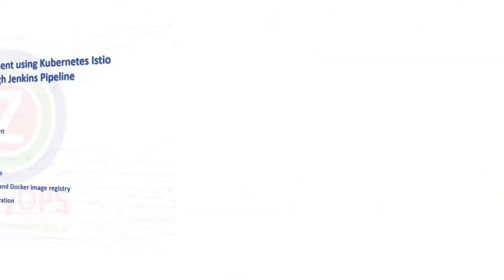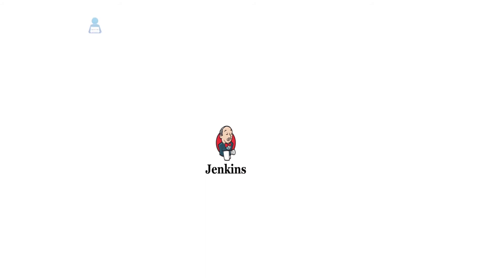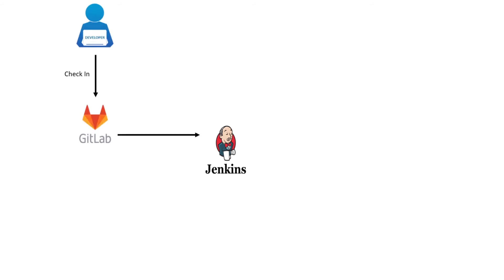Let's explore the workflow of .NET application deployment stage by stage. In the first stage, Jenkins' job will pull the .NET application source code from GitLab. A webhook is configured on GitLab so that the ongoing deployment job will trigger automatically when a commit happens on a particular branch.